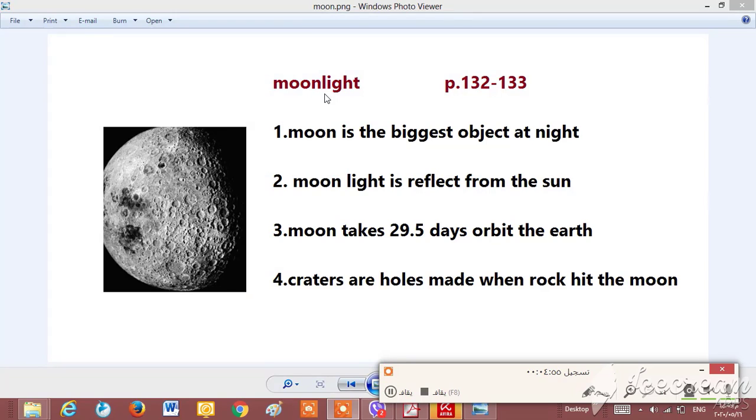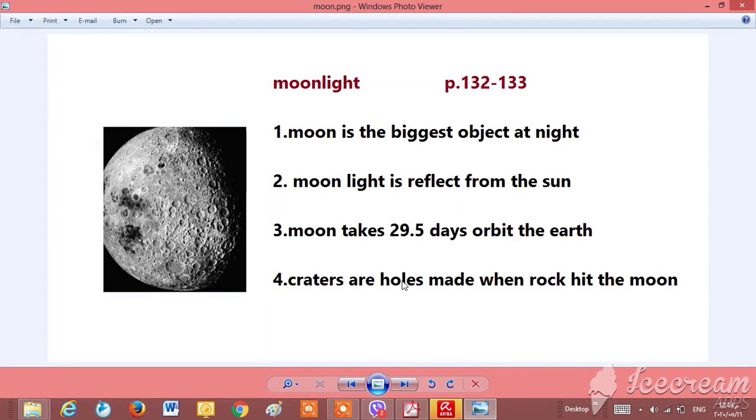The moon is the biggest object that we see at night. Moonlight is reflected from the sun. We said that the moon doesn't have its own light—we can't see it at night—but this light is reflected from the sun.